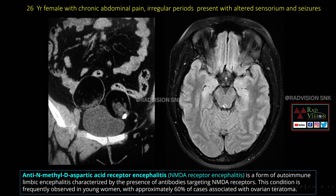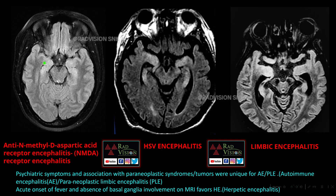This condition is anti-N-methyl-D-aspartate receptor encephalitis — NMDA receptor encephalitis — which is a form of autoimmune limbic encephalitis characterized by antibodies targeting NMDA receptors. This is frequently observed in young women, and approximately 60% of cases are associated with ovarian dermoids or teratomas. Whenever you see this autoimmune encephalitis, also screen the abdomen to rule out ovarian dermoids. Other differentials include HSV encephalitis — acute onset fever, absence of basal ganglia involvement — and paraneoplastic limbic encephalitis associated with tumors.